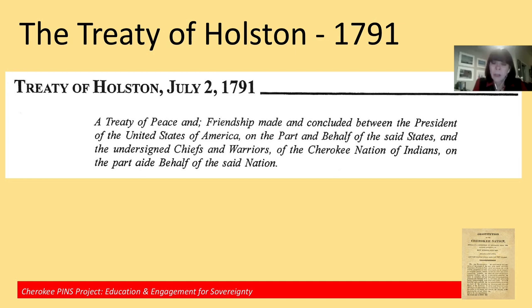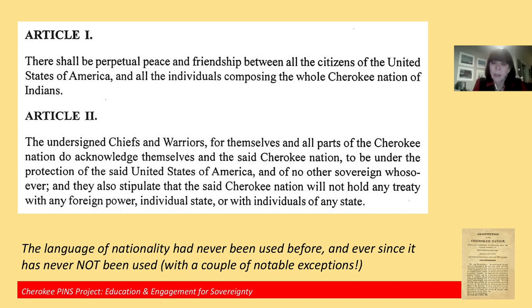We see this nationality language reiterated in the first articles of that treaty — 'the individuals of the whole Cherokee Nation of Indians' — and that the Cherokee Nation places itself under the protection of the United States. This language of nationality had never been used before, and ever since 1791 it has almost never not been used, with a couple of exceptions where the group negotiating was not the government — most famously or infamously in the Treaty of New Echota.